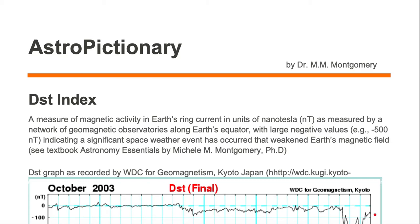The DST index is a measure of magnetic activity in Earth's ring current in units of nanotesla, as measured by a network of geomagnetic observatories along Earth's equator. Large negative values, such as minus 500 nanotesla, indicate that a significant space weather event has occurred that weakened Earth's magnetic field.